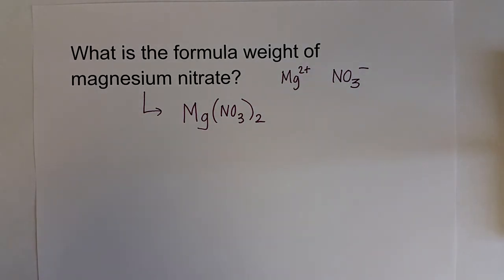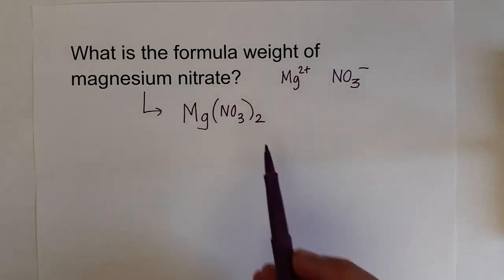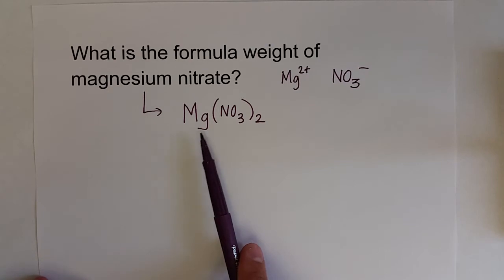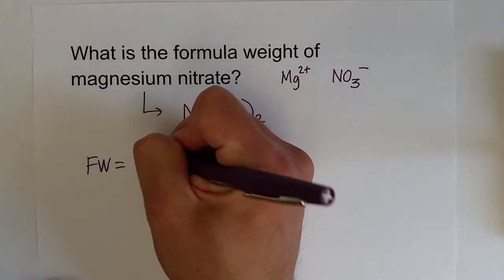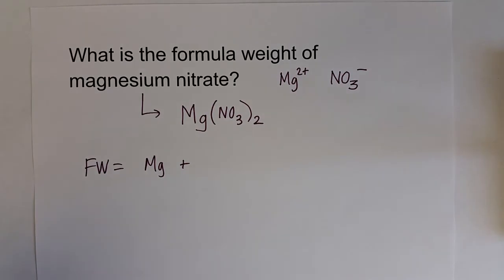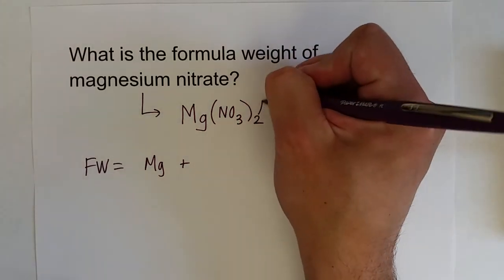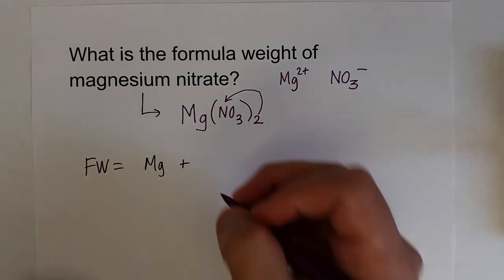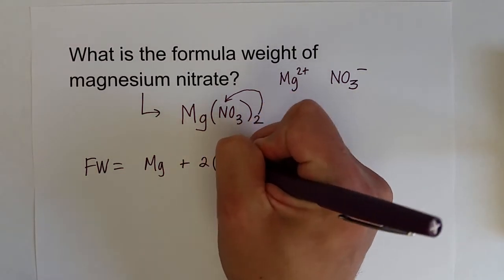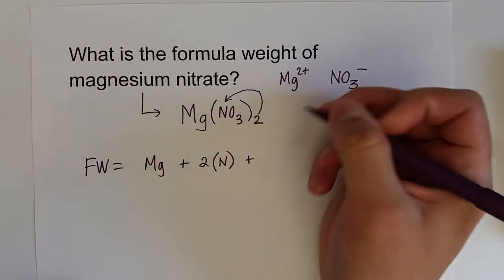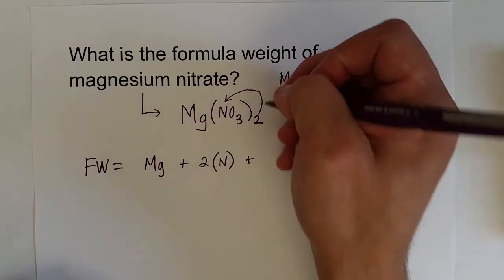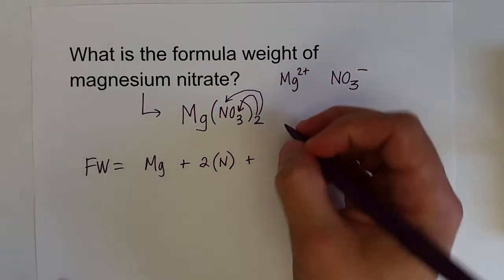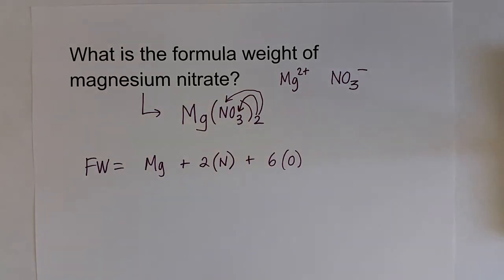When we calculate the formula weight of magnesium nitrate, we need to think about how many of each atoms are in this compound. We've got one magnesium, so the formula weight for this compound will be the atomic mass of magnesium, plus how many nitrogens do we have? We've got two nitrates, and each nitrate has one nitrogen, so we've got two nitrogens, plus two times the atomic mass of nitrogen. Each magnesium nitrate has two nitrates. Each nitrate has three oxygen, so when this factors in, we've got two times three, or six, oxygen atoms in this ionic compound.